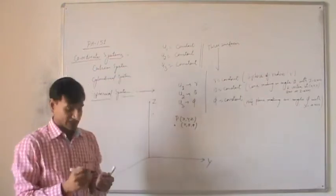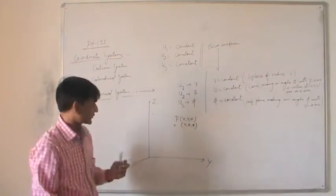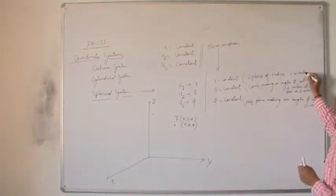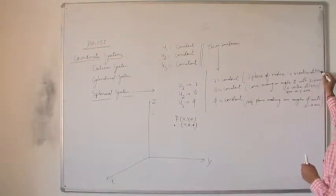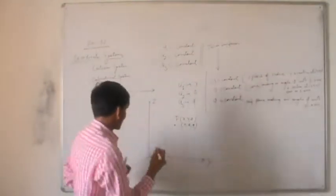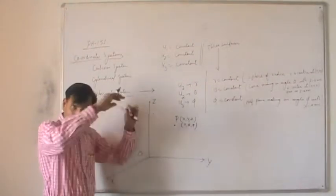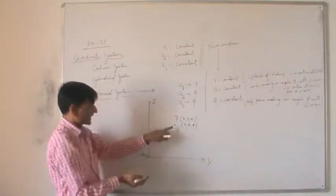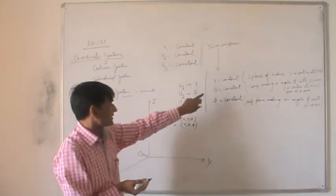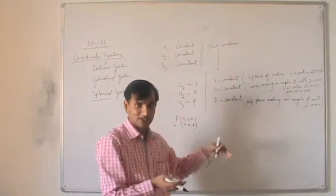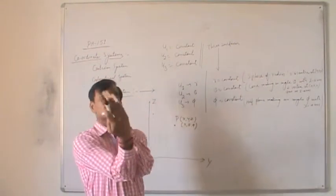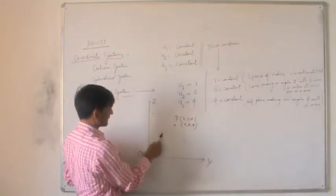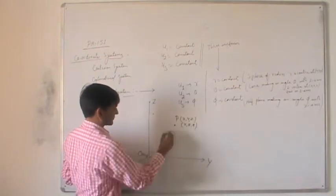This point has coordinates R, theta, and phi, and is lying on the surface of the sphere. You need to imagine a sphere of radius R with center at the origin. The second surface is theta equals constant — this is a cone which is around the Z axis.